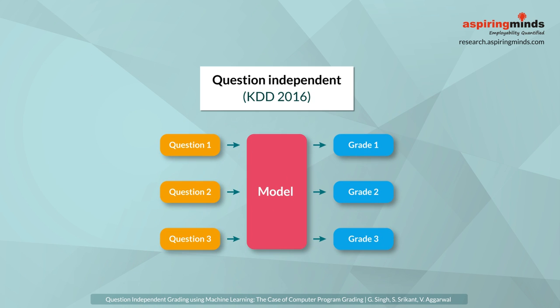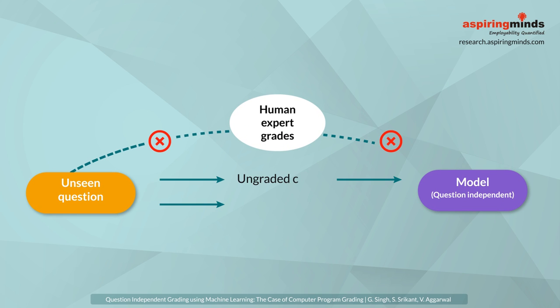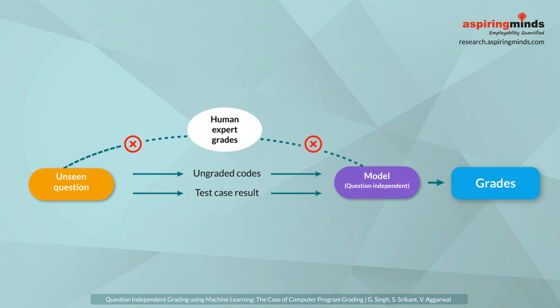In this work which we will present at KDD 2016, we train a single question independent model. For a new unseen question, we simply need to feed a set of ungraded codes, the result of test case sweep, and our model automatically predicts the grade.